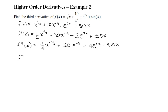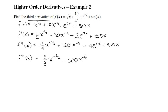Now we take the third derivative — the last one we need. For the first term, negative 1 quarter times negative 3 over 2 is positive 3 over 8, times x to the power of negative 5 over 2. For the next term, 120 times negative 5 gives minus 600x to the power of negative 6. For the third term, using chain rule again, 4e to the 2x multiplied by the derivative of 2x gives minus 8e to the 2x. For the last term, the derivative of sin x is cos x, so it becomes minus cos x. This is your third derivative of f(x).